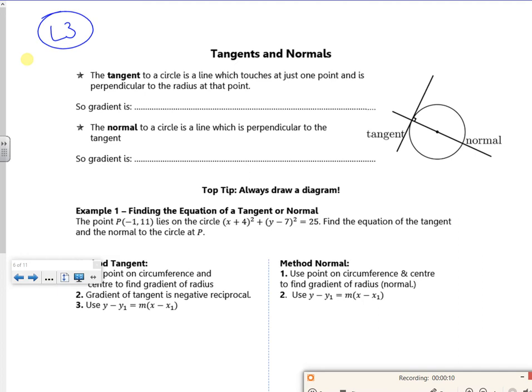The tangent to a circle is a line which touches at one point and is perpendicular to the radius. This part here is my radius. I've got a diameter but because I'm dealing with circles I'm really interested in the radius. So the gradient is perpendicular to—oh I've already got the gradients perpendicular to the radius.